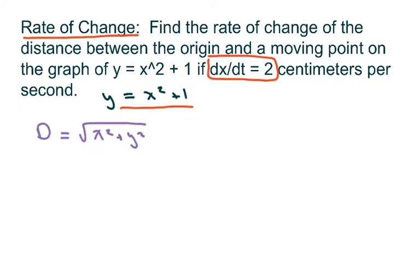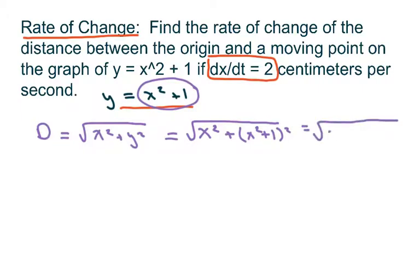So using substitution, I have my y here, so I'm going to go this equals the square root of x squared plus my y squared. And that's going to equal square root of x to the fourth plus 3x squared plus 1.